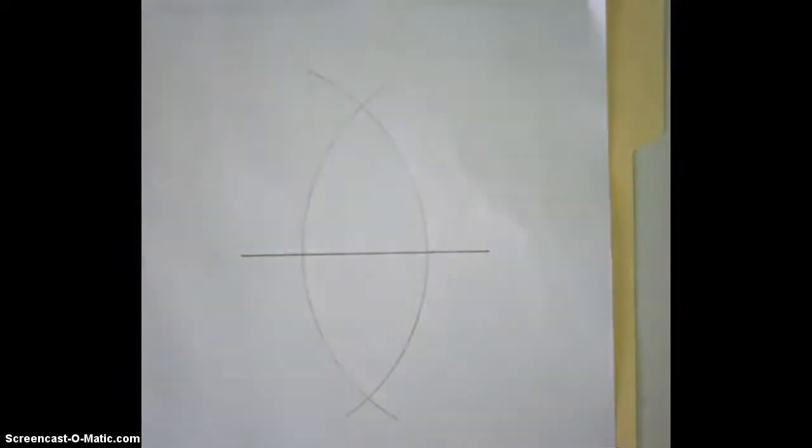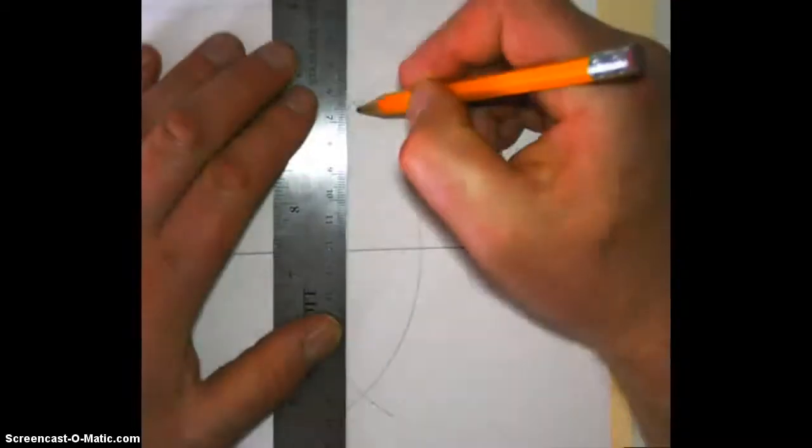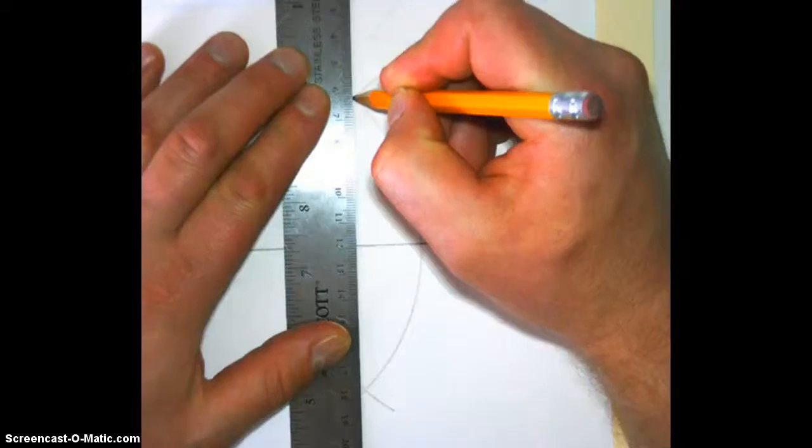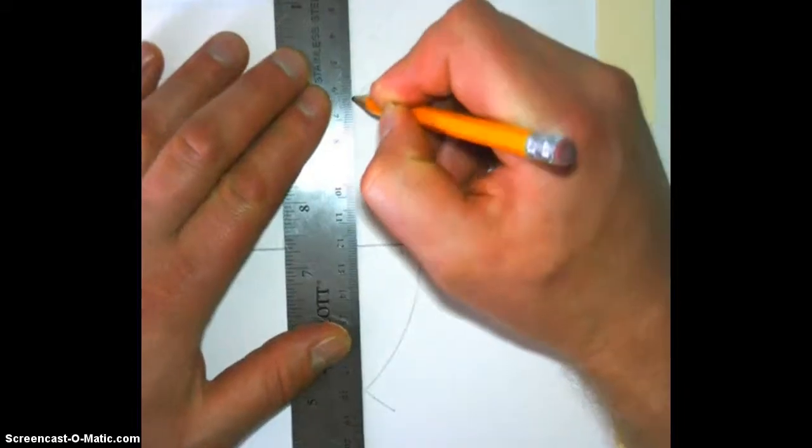And then you're going to draw in your perpendicular bisector. So that'll mean connecting the two endpoints, or the two intersection points of your arcs, rather.